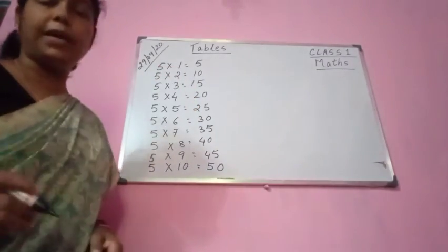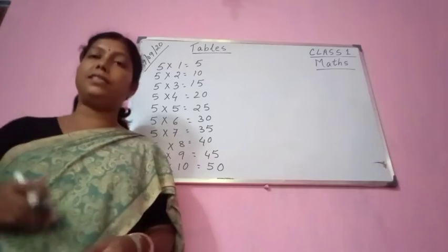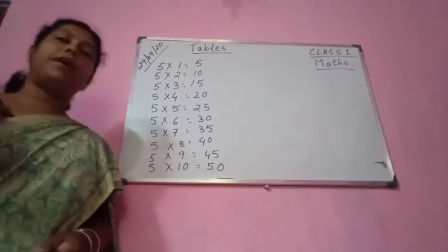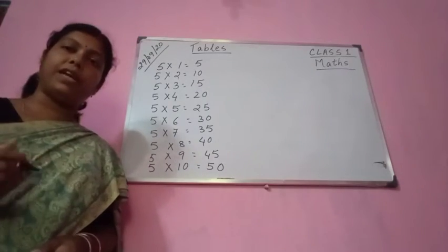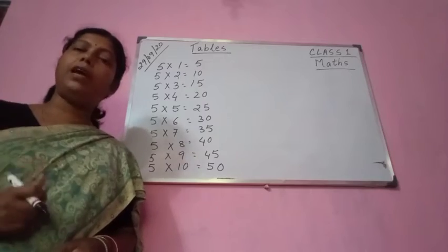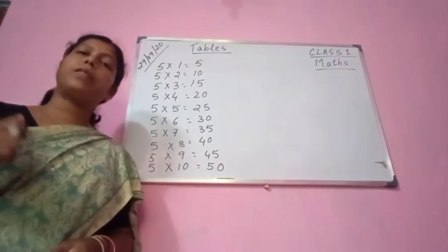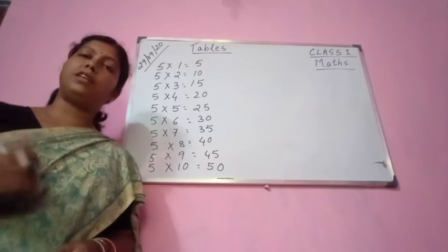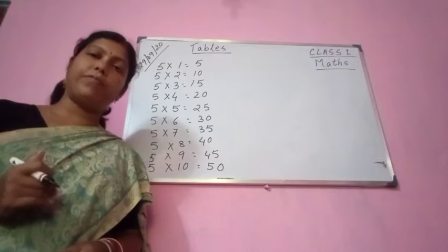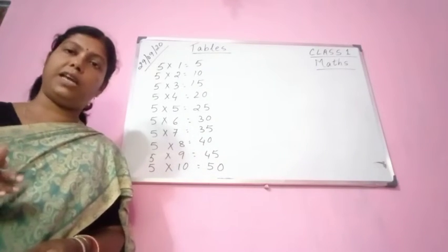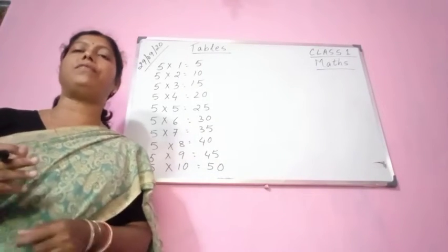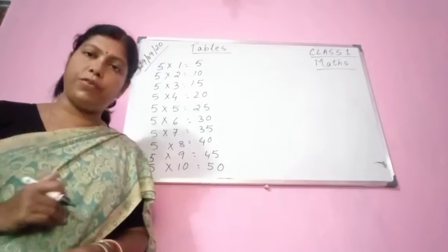So once again: 5 ones are 5, 5 twos are 10, 5 threes are 15, 5 fours are 20, 5 fives are 25, 5 sixes are 30, 5 sevens are 35, 5 eights are 40, 5 nines are 45, 5 tens are 50.